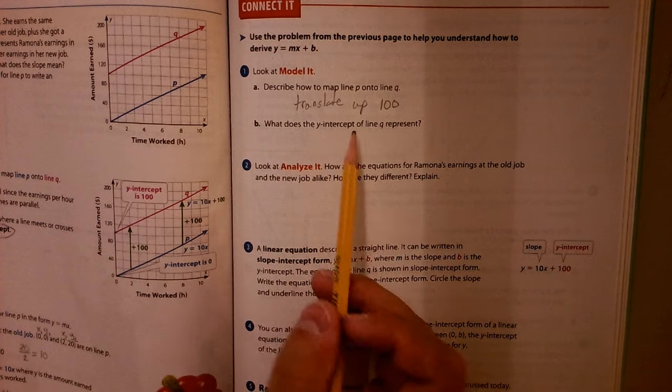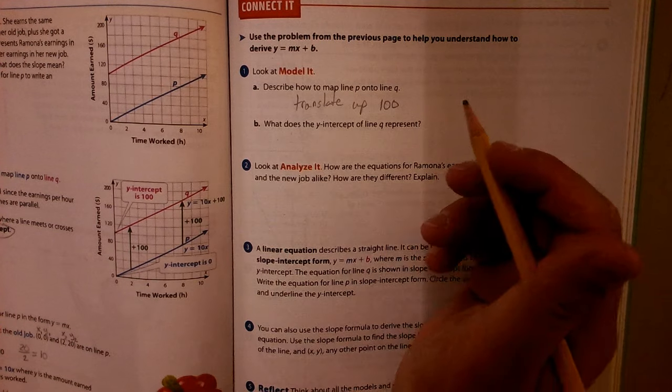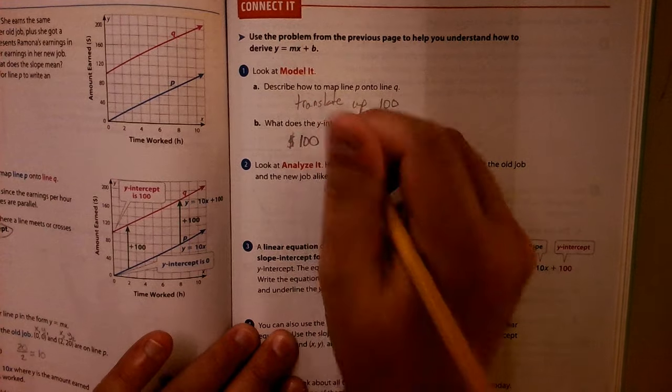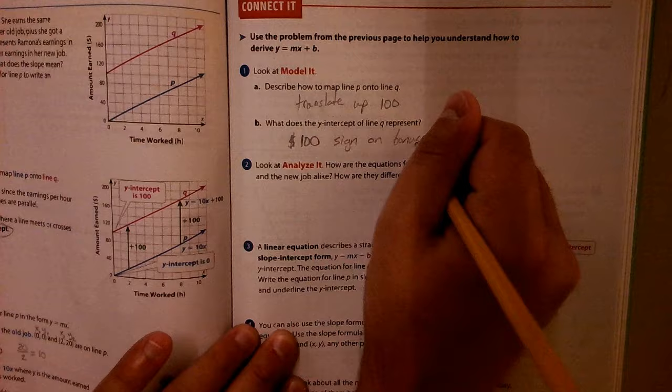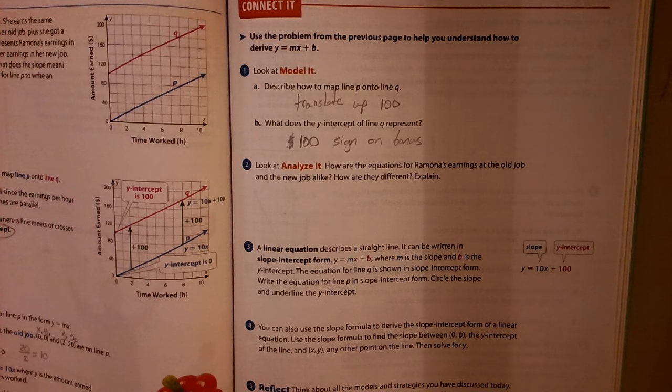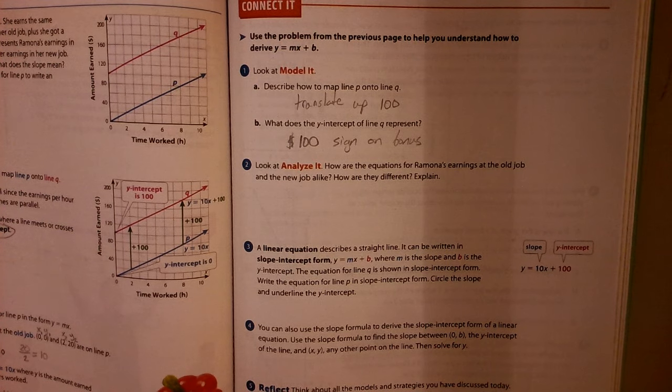And then what does the Y-intercept of the line Q represent? Well, we talked about that also. So that represents the $100 sign-on bonus she received. So that just represents the $100 sign-on.